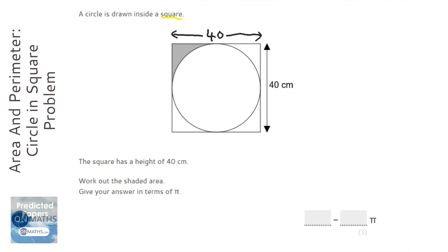OK, most of these shaded areas, we're going to find the area of the big thing, find the area of the small thing and normally take them away. So let's first of all work out the area of the square.